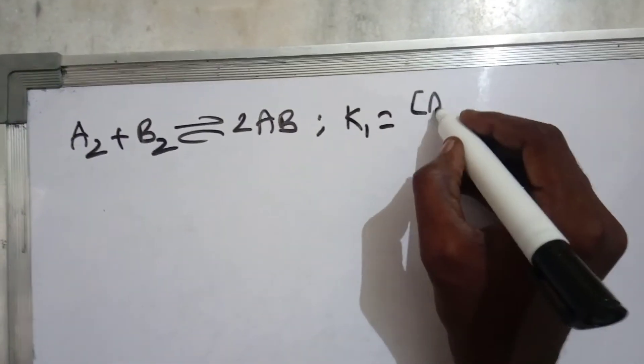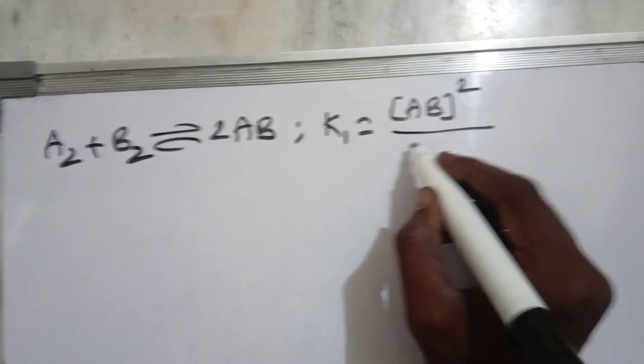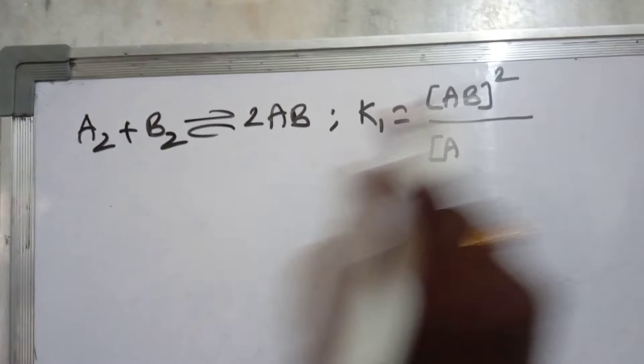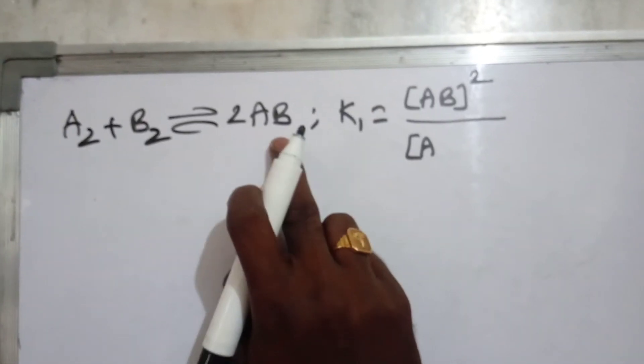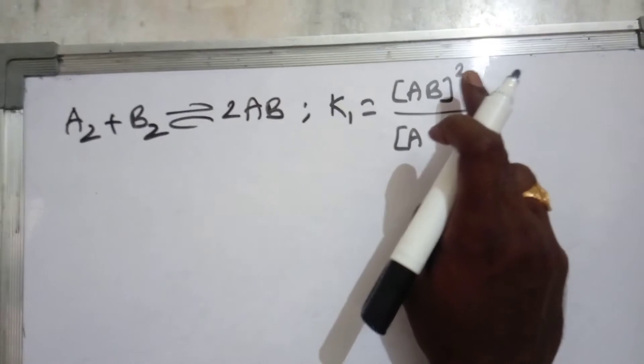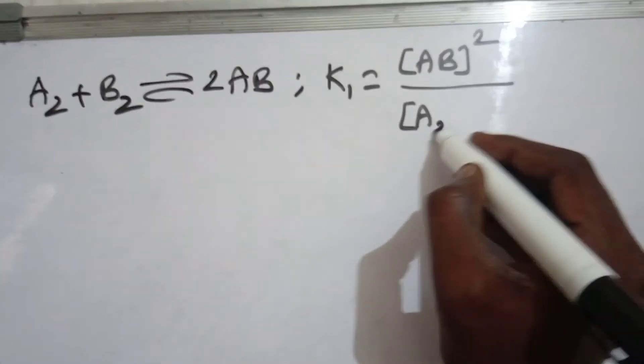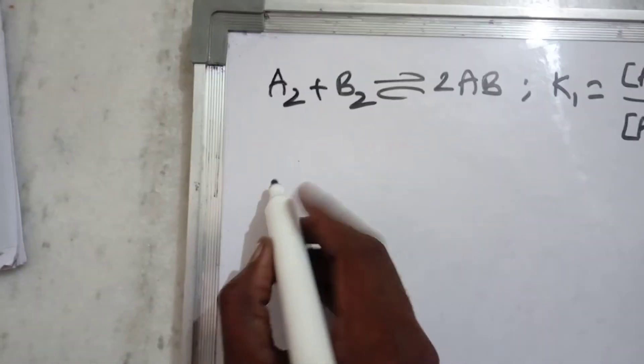K1 is the concentration of products by reactants. Concentration of AB, 2 moles. Concentration of AB is 2AB. AB power 1 and AB power 1 gives AB power 2. And reactants A2 into concentration of B2. So that is the first equation.